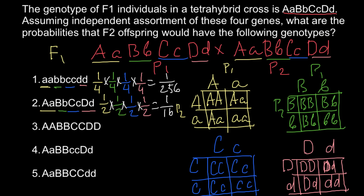Now let's solve the next example. For the genotype to be capital A capital A, the chances — as you can see — are one quarter. For gene B to be homozygous dominant, chances are also one quarter. For gene C to be homozygous dominant, chances are also one quarter. And for gene D to be homozygous dominant, also one quarter. When we multiply all these numbers we get the same answer as in example one: 1 over 256.